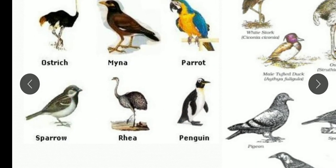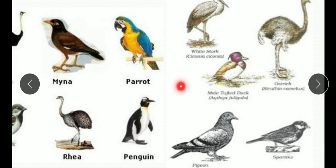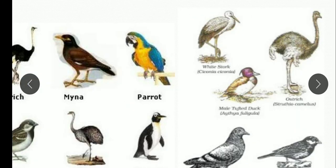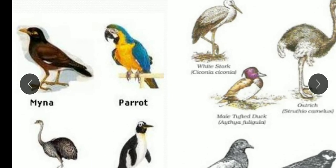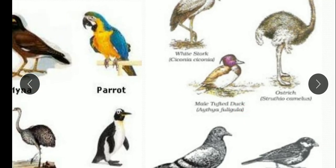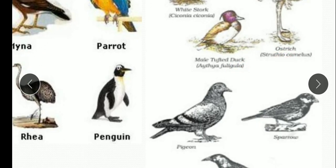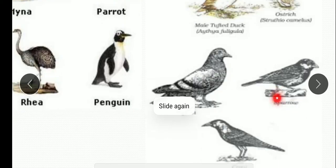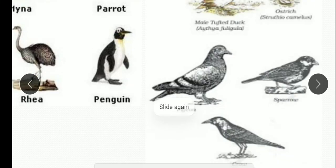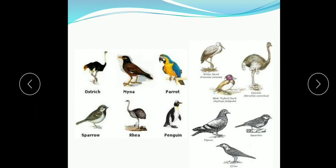Examples of Aves: ostrich, Maina, parrot, sparrow, Rhea, penguin. Some are flightless birds — penguin and others. Also white stork, duck, pigeon, crow. All these are examples of birds.